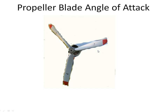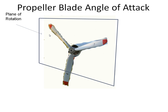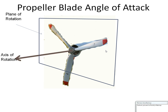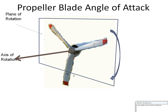Here we have a propeller — a three-bladed propeller attached to an aircraft. Around the propeller we have a plane of rotation, so the blades are rotating in this plane. There's the axis of rotation. Let's assume that the blade is rotating in a clockwise direction as we look at it.